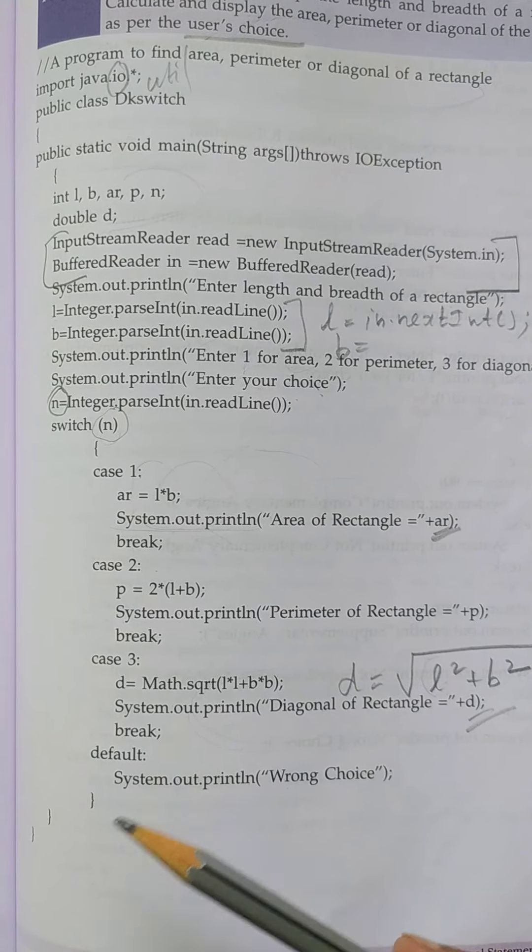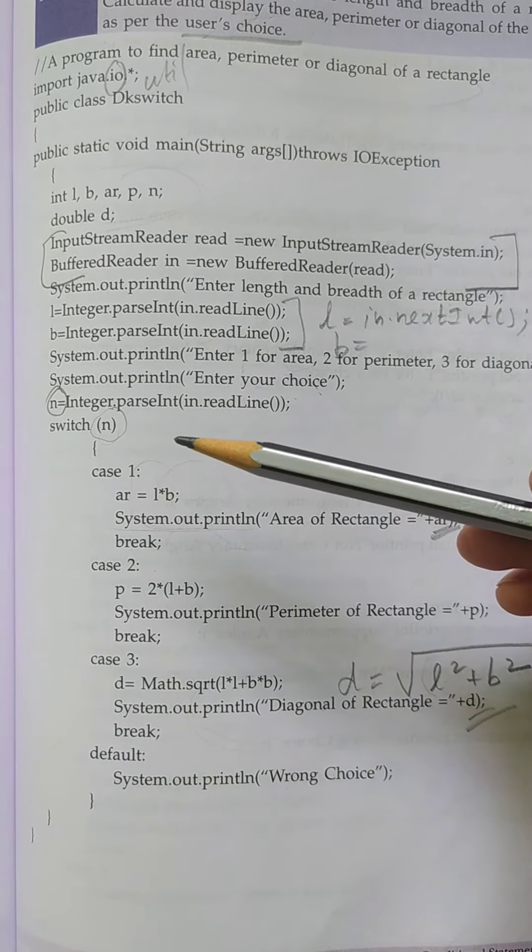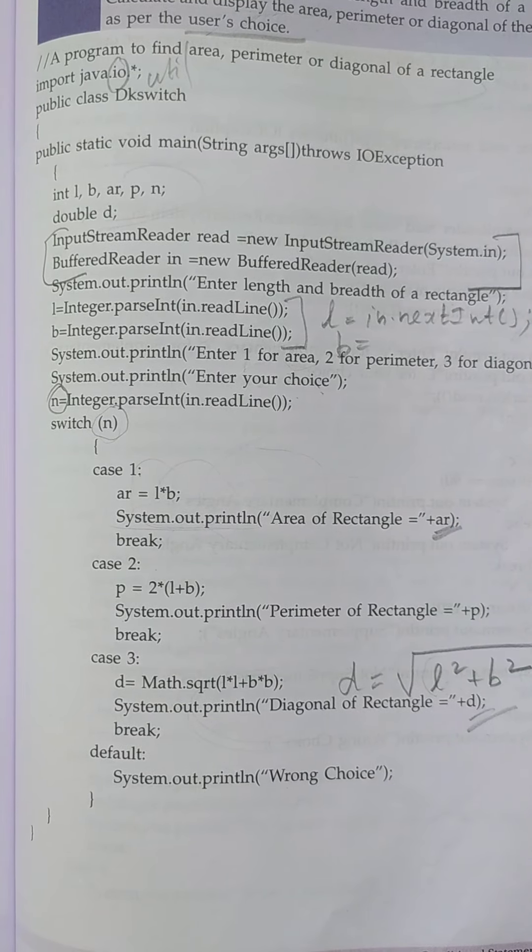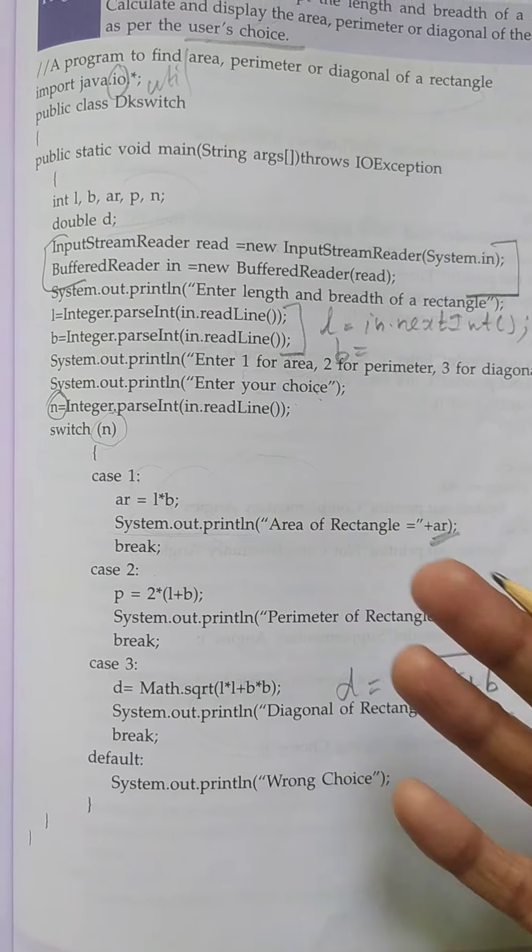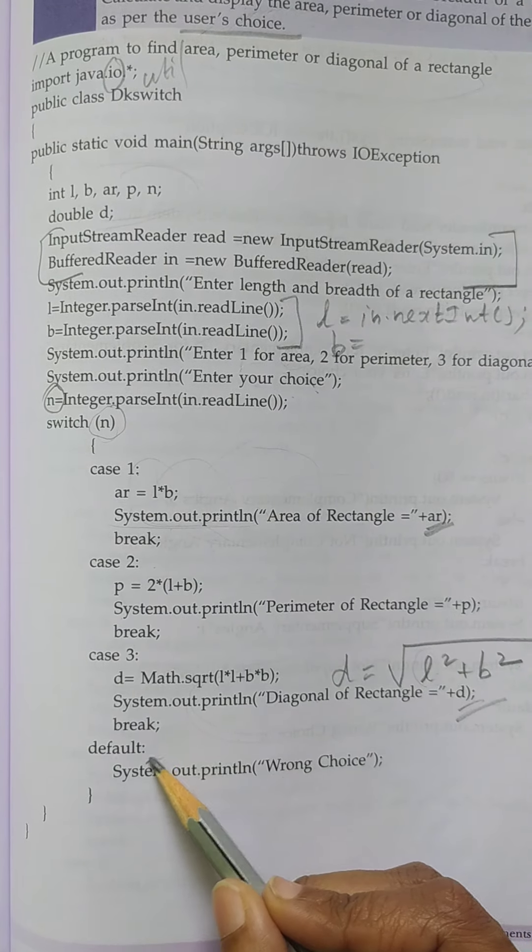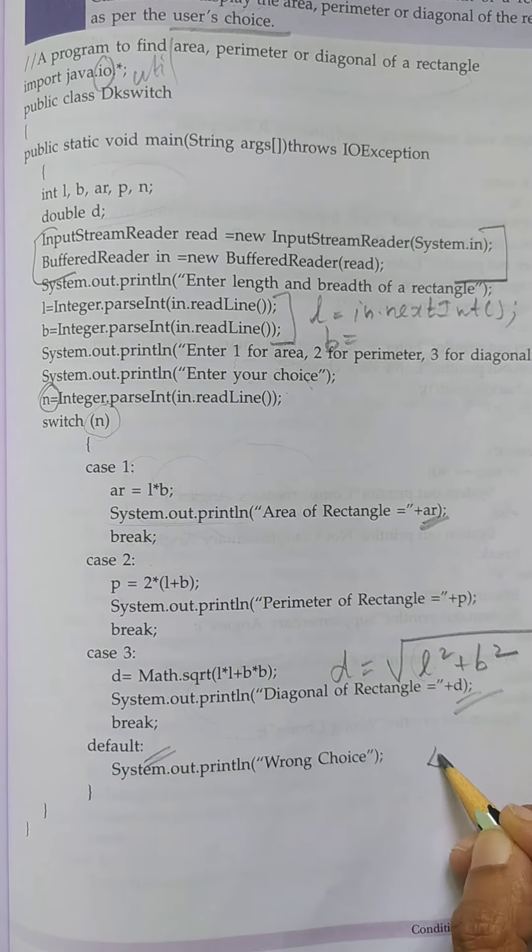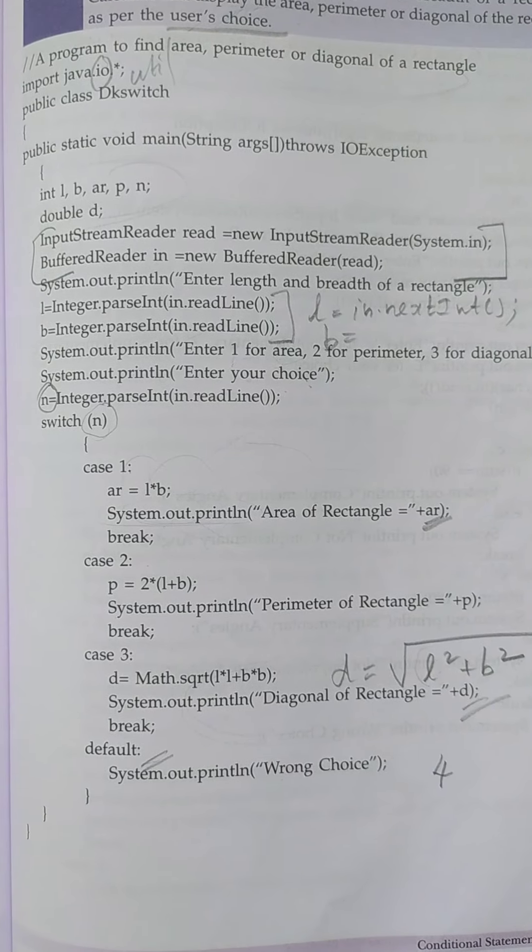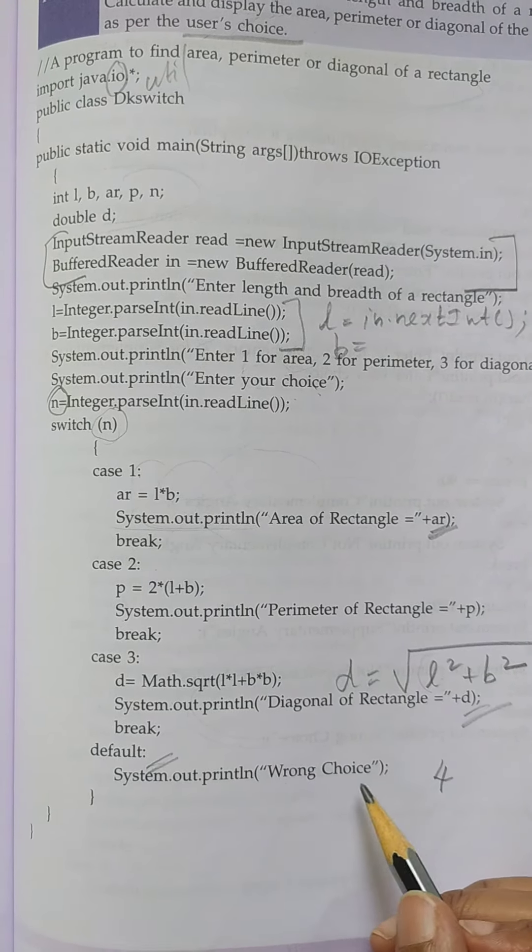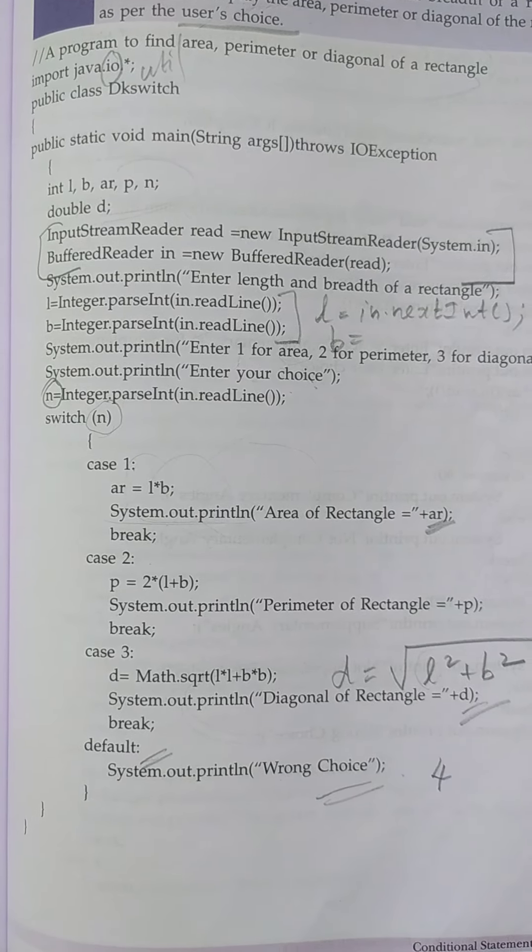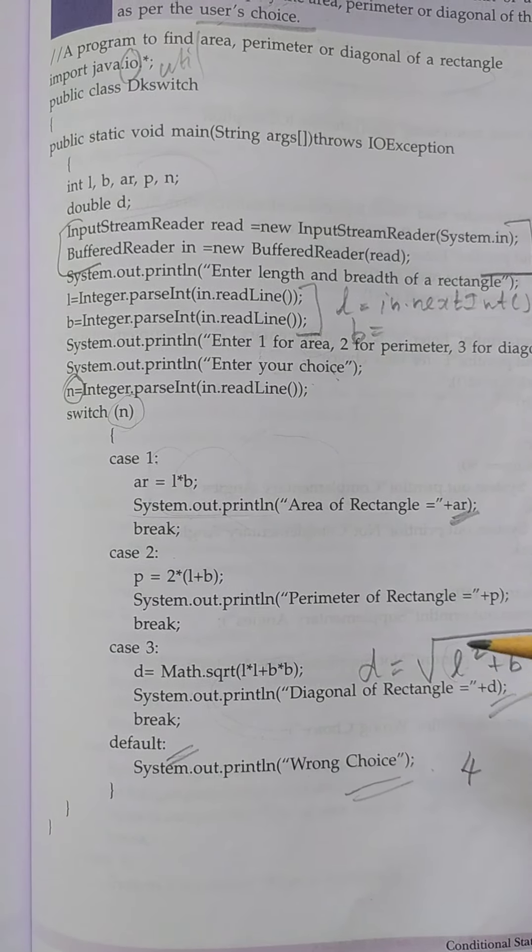If more than—in this program only three cases are there. So mistakenly if the user presses any other button than these cases, you can give a default case. For example, he is pressing four, so there is no such case in this program, so it will display 'Wrong Choice.'